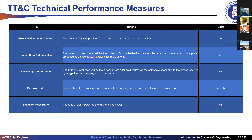TT&C technical performance measures include power delivered to the antenna — accounting for antenna efficiency, which for a patch antenna is roughly 55% depending on size and type — and antenna gain, which must be known and characterized.